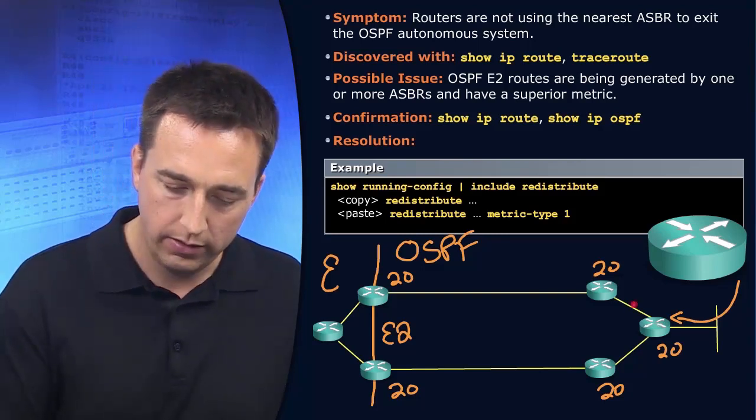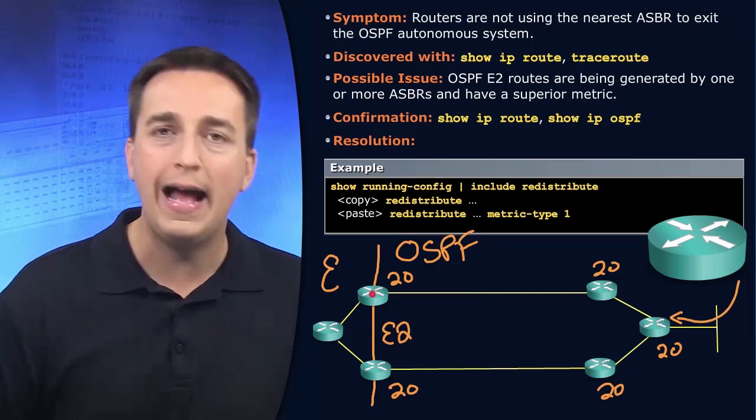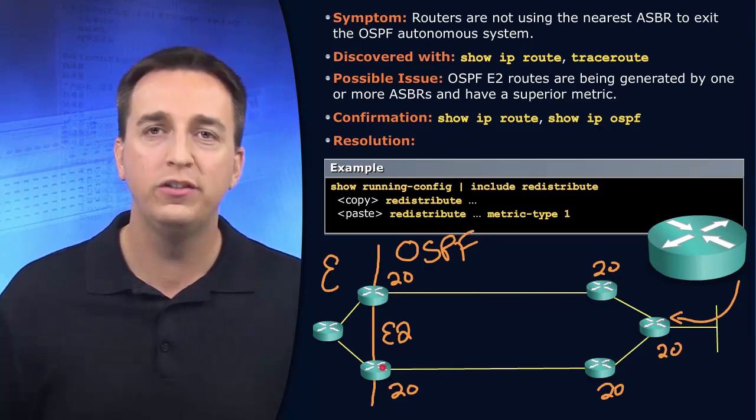So the path from here to here has to be the same as the path from here to here to do load balancing.